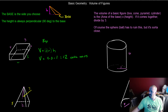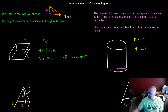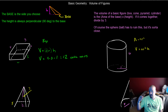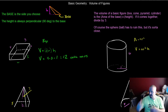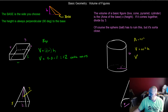Moving over to the cylinder, the area of the base is pi r squared because the base is a circle, and we're only dealing with circular cylinders. So the volume is the area of the base times the height. In the case of a cylinder, the wall itself is the measurement of the height.